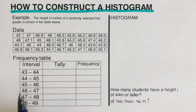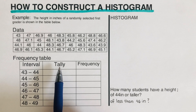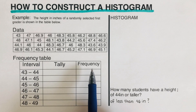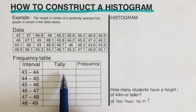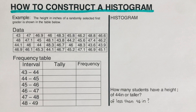In this table I have divided it into three columns. The first one is Interval, the second one is Tally — how many belong to that interval — and the third one is Frequency, which is the total for the tally that we get.